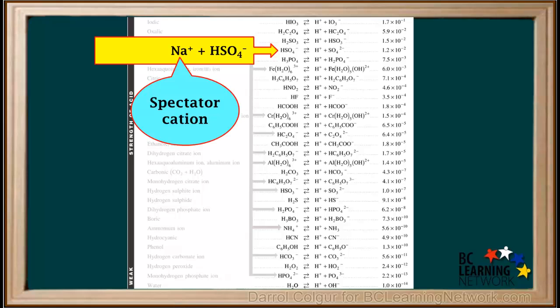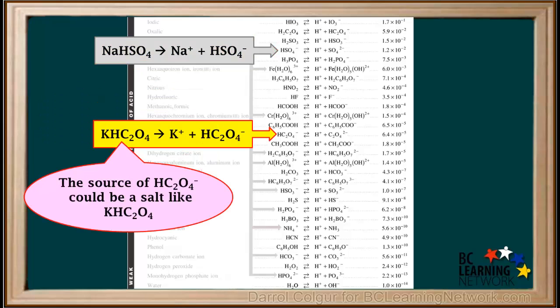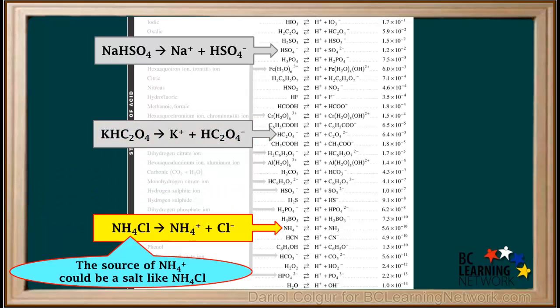For example, the HSO4- ion could be accompanied by the spectator cation, Na+. These two ions would result from the dissociation of the salt sodium bisulfate, NaHSO4. Similarly, the hydrogen oxalate ion, HC2O4-, could come from the dissociation of the salt potassium hydrogen oxalate, KHC2O4. And the positive ion, NH4+, could come from the dissociation of an ammonium salt like NH4Cl. The Cl- ion is a spectator here.